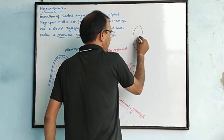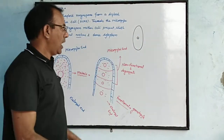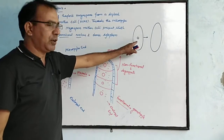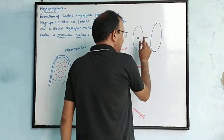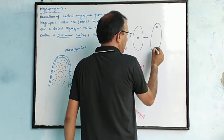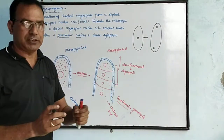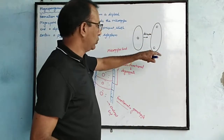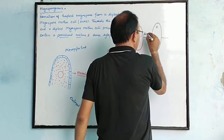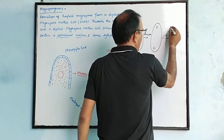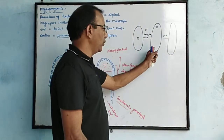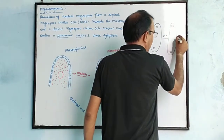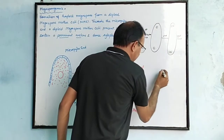After becoming a gametophyte, division takes place again. One cell divides into two. Both cells go to opposite walls. Then a third division takes place, forming eight nuclei in total.